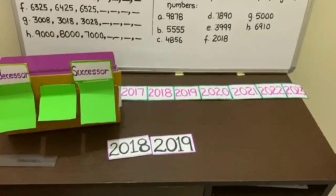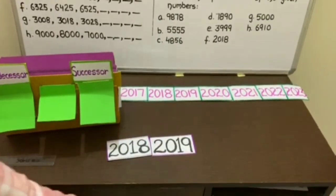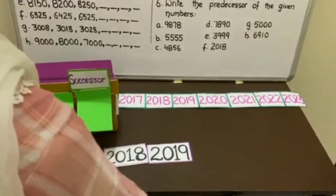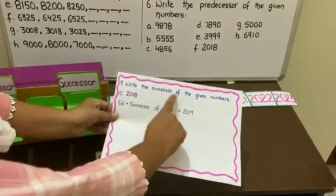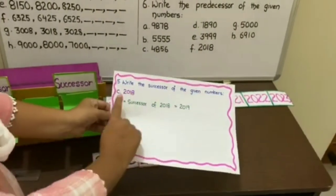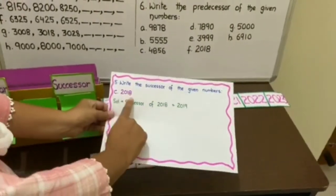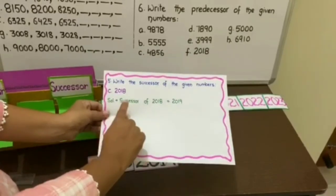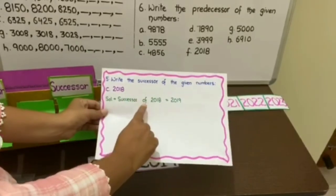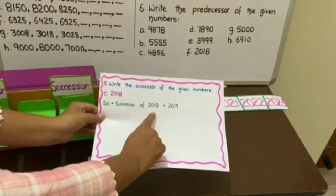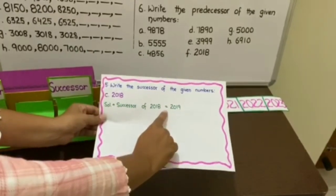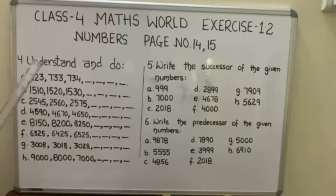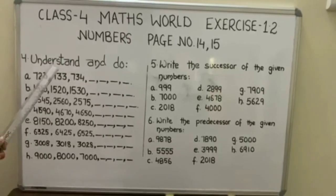To write this in your notebooks, copy the question, then the part you are answering, and in the solution write: successor of 2018 equals 2019.